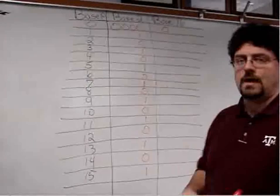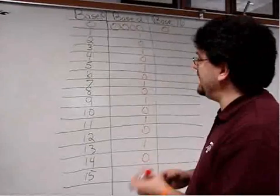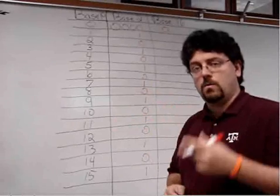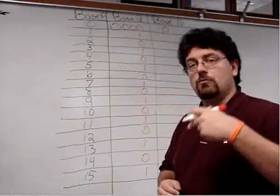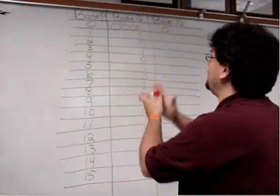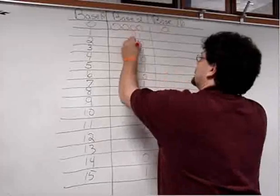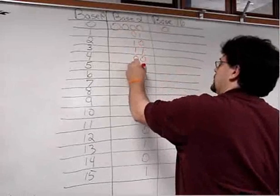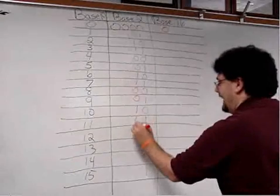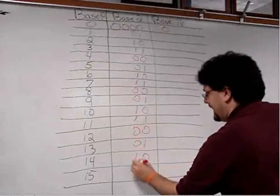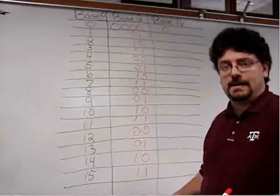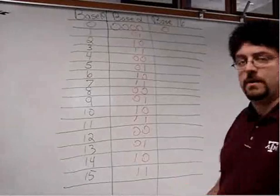Now, 1 plus 1 is 2, right? So instead of rest-beat, rest-beat, we're going to go rest, rest, clap, clap — and that pattern repeats: rest, rest, clap, clap. We're creating our binary chart right here. 1 plus 1 is 2.